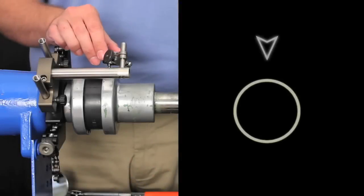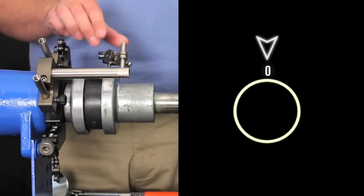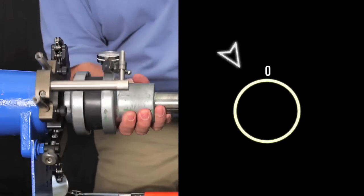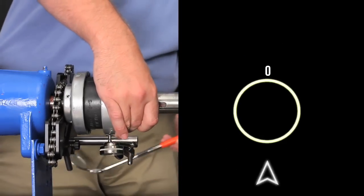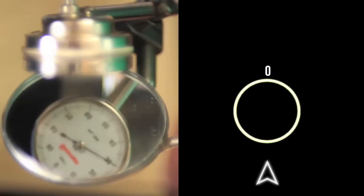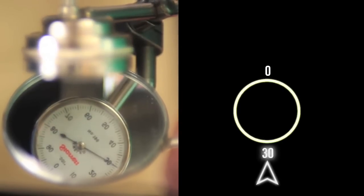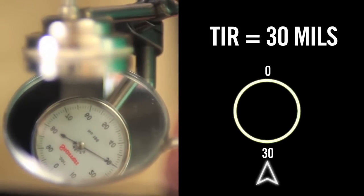I'll zero my dial indicator at 12 and then roll it 180 degrees to 6 o'clock. It reads 30 mils, which represents the total indicator reading or TIR.